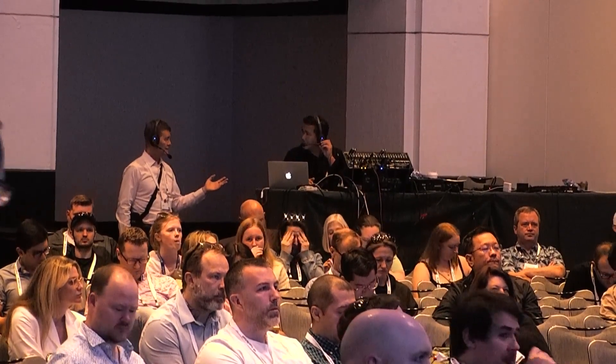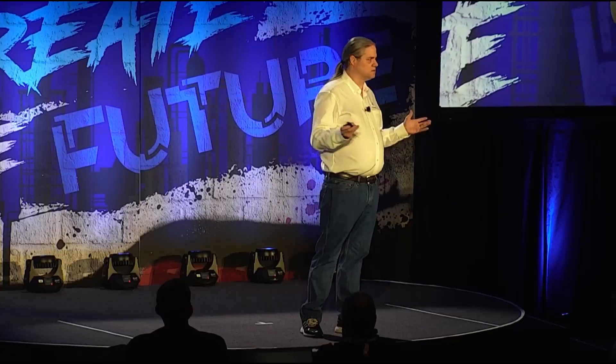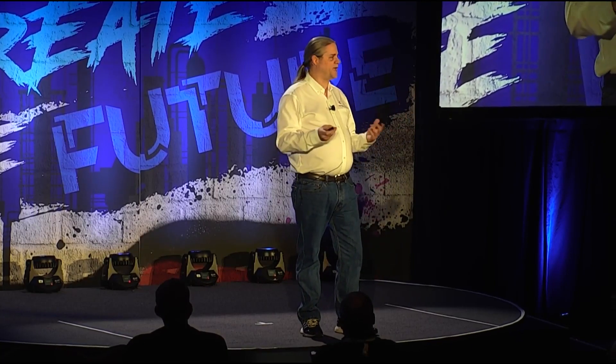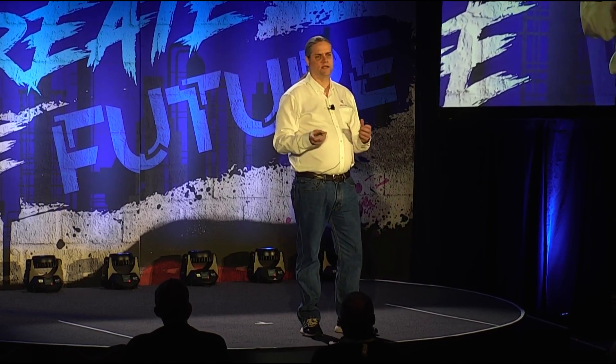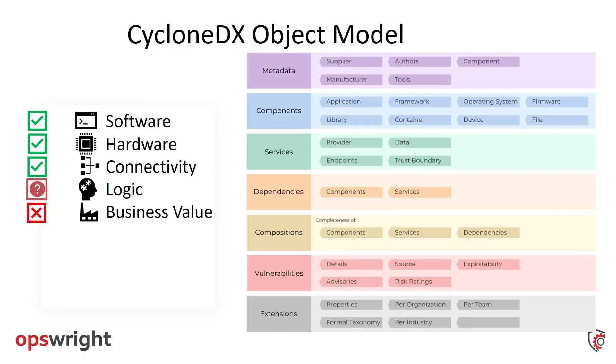First, I want to talk about systems — what is the system, how do I define a system? I asked in the Hoova app prior to this talk: is a system defined by its components, what it does, its network connections, or its business value? Overwhelmingly — probably 60 to 70 percent of respondents — said what the system does. However, when we look at building materials, we think about what the system is, what goes into it. So let's pull on that thread a bit.